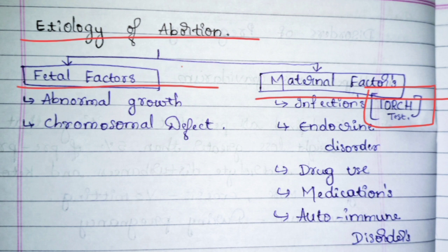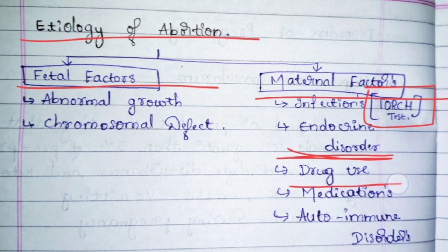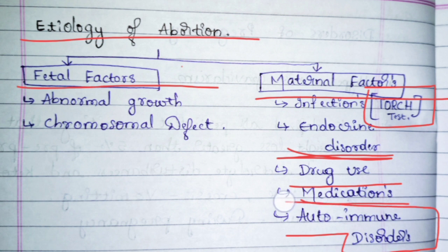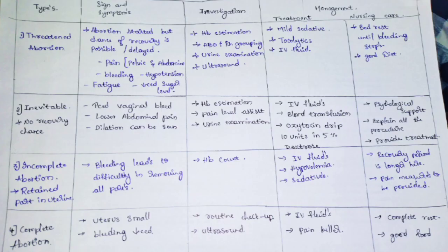Other maternal causes include endocrine disorders such as thyroid problems or polycystic ovarian conditions, drug use (alcohol, tobacco, unhealthy lifestyle), unprescribed or overdose medications, and autoimmune disorders — mainly AIDS. In many AIDS cases the baby may be born, but in many other cases there is no fetal growth, leading to abortion.